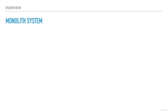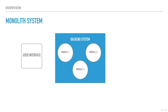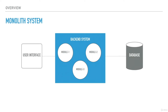In a monolith implementation, enterprise applications are typically built in three parts: user interface, backend system, and a database. In legacy applications, even the user interface used to be bundled together with the backend services. Assuming a better version of monolith where the UI sits separately, all calls from the UI go to the backend system where multiple modules sit together as a single unit. These modules communicate to the database to read or write data and return the response back to the UI. When we talk about monolith in the context of microservices, we are talking about the backend services where multiple modules sit together as one unit.